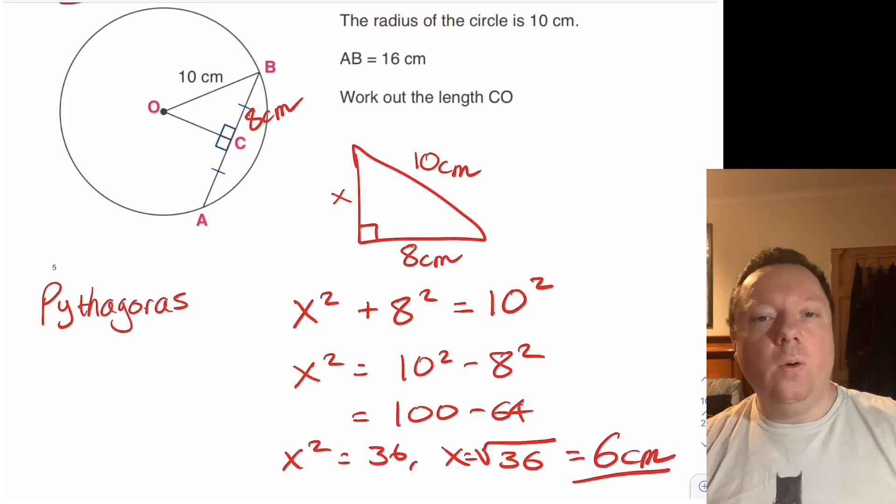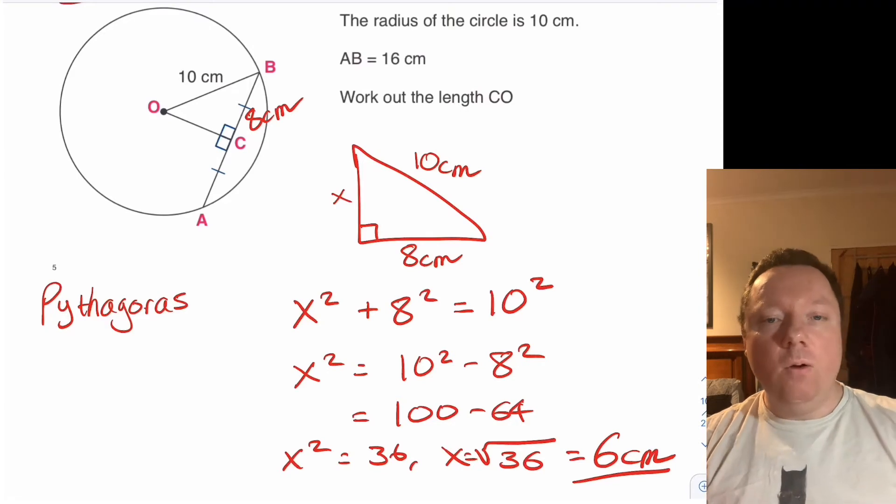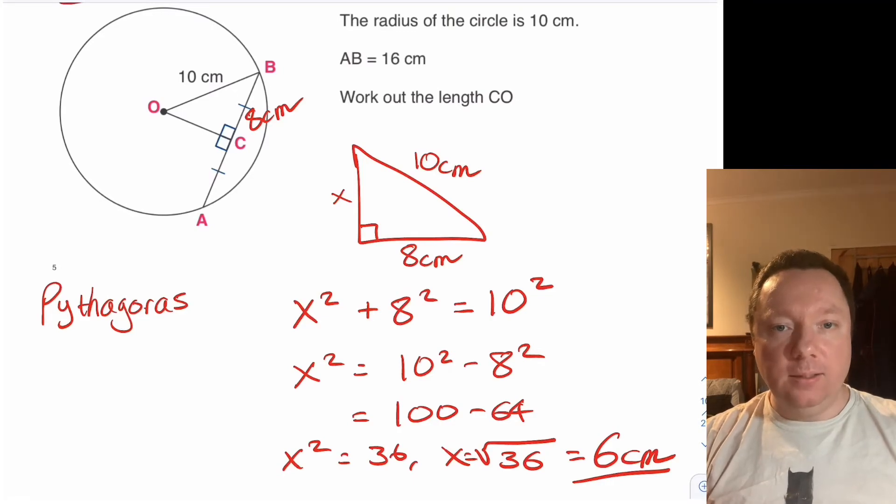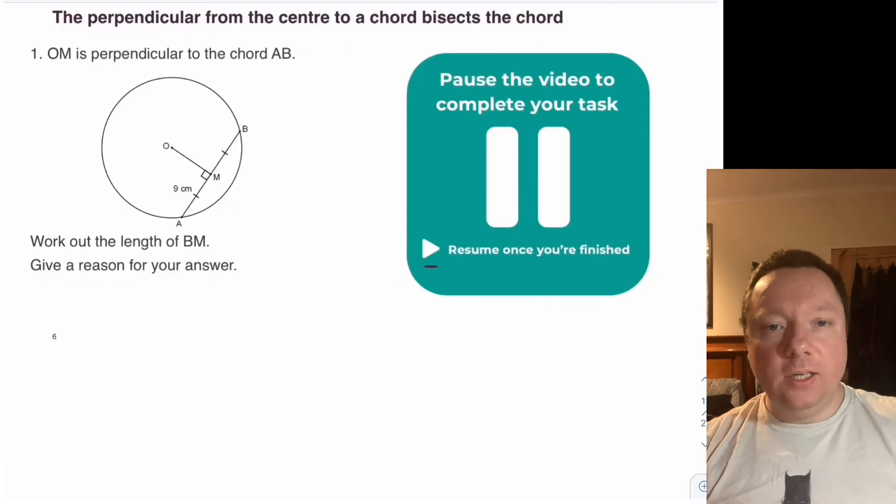And that's a very common question. It'll come up again and again. We make a triangle inside a circle. It ends up being a right angle triangle. So you need to use Pythagoras to solve it and get the missing side. Some tasks for you to try.